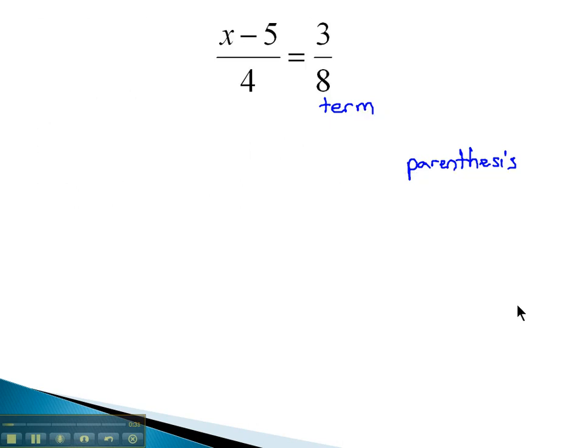So for example, if I had a problem like x minus 5 over 4 is equal to 3 over 8, as we calculate the cross product, we're going to remember to put that x minus 5, that binomial, in parentheses.